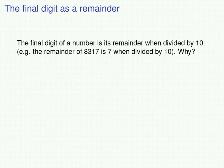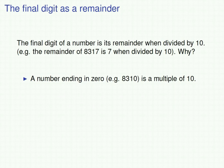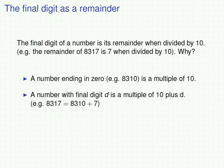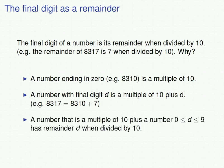Why is this the case? Firstly, a number ending in 0, such as 8,310, is a multiple of 10. Next, a number with final digit D is going to be a multiple of 10 plus D. For example, 8,317 is 8,310 plus 7 — a multiple of 10 plus 7, its final digit. Finally, a number that's a multiple of 10 plus a number between 0 and 9 has remainder equal to that number between 0 and 9. The final digit is always between 0 and 9, so that's why the final digit of a number is its remainder when divided by 10.